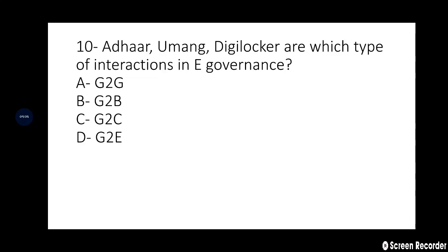Tenth question: Aadhaar and DigiLocker — which type of interaction is this in e-governance? A: G to G (Government to Government), B: G to B (Government to Business), C: G to C (Government to Citizens), D: G to E (Government to Employees). The right answer is option C — Government to Citizens. Aadhaar and DigiLocker are built for citizens. Examples of G to G include e-courts and e-police; G to B includes e-taxation.